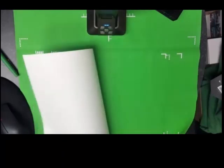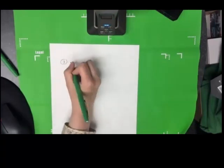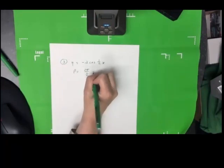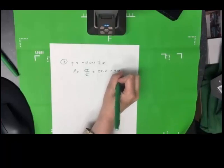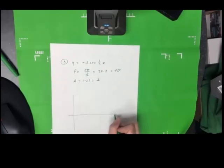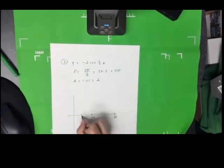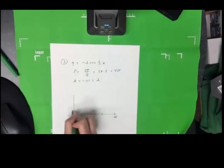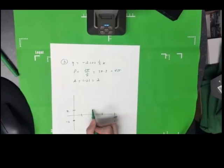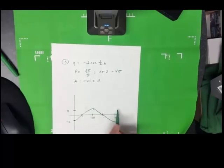For y equals negative two cosine(½x): the period is 2π over one-half, which equals 4π, and the amplitude is two. Halfway is 2π; the quarter marks are π and 3π. The range is negative two to two. Because the coefficient is negative two, the cosine graph is flipped — the minimum is at the beginning and end, the peak is in the middle, and zero occurs one-fourth and three-fourths of the way through.